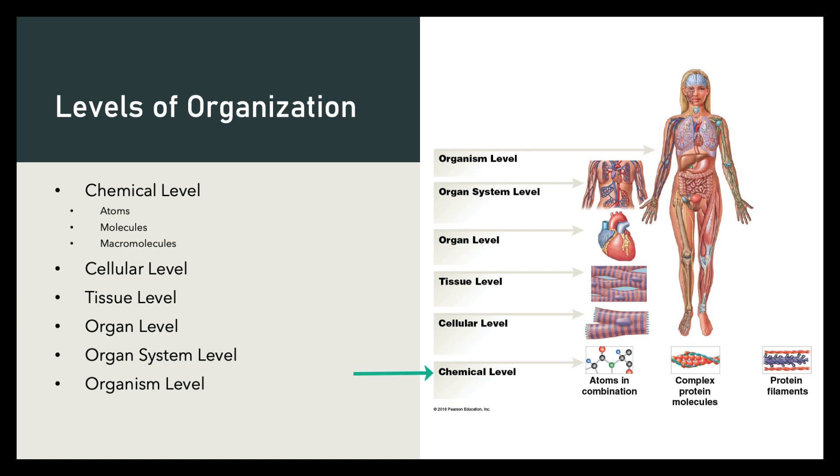In chapter two, we're going to study the structure of the smallest unit of matter, atoms, and then we're going to see how their structure determines what types of bonds they make to create larger molecules. When you create enough molecules and put them together, it forms the next higher level of organization, the cellular level. In chapter three, we'll learn about cells.